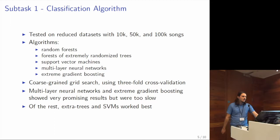The approach mentioned before is independent of concrete classification algorithm. We created reduced datasets with 10K, 50K, and 100K songs, and then tested different classification algorithms on them to see which ones worked best. We tried random forests, forests of extremely randomized trees, support vector machines, multi-layer perceptrons, and extreme gradient boosting. We did a coarse-grained grid search for all of them using three-fold cross-validation on those three reduced datasets.